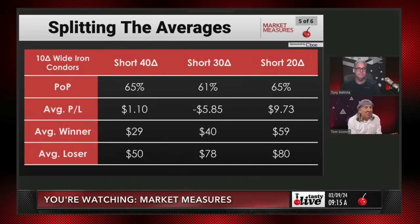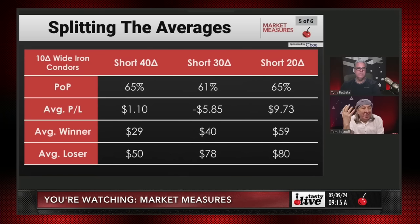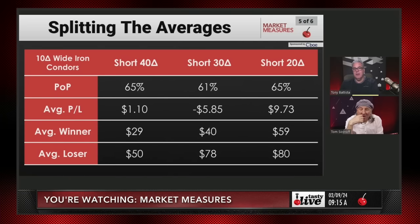Now we're going to look at the same strikes but with $10 wide iron condors, which is less of a synthetic. Here, it's an absolute no-brainer — highest POP, the only ones you really make a lot of money on. The average winner blows everything else away, and the average loser is the same as everything else. You have to do the short 20 or 30 delta. You can't do the at-the-money iron condors. The numbers are there — can't make an argument for anything else.